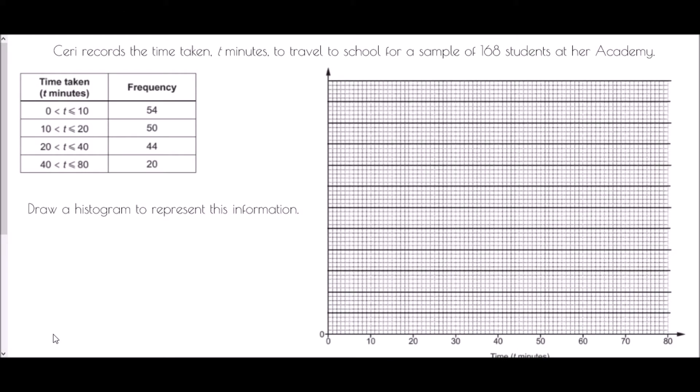Okay, so we've been told that Cherry records the time taken in minutes to travel to school for a sample of 160 students at her academy. In the table we can see the time taken is between 0 and 10 minutes, between 10 and 20 minutes, 20 and 40 minutes, and 40 and 80 minutes. We've been asked to draw a histogram to represent this information.